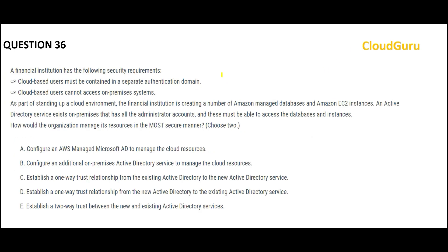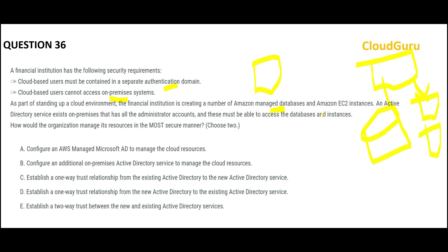Now this next question is talking about a financial institution — like Bank of America or Wells Fargo. They want a separate domain for cloud-based users, and cloud users cannot access on-premises systems. On AWS you have managed databases, EC2 instances — all on cloud. On-premises you have Active Directory services with all admin accounts. These admin accounts must be able to access the cloud databases and instances, and we want to do it in the most secured manner — that is the keyword. We need to choose two answers.